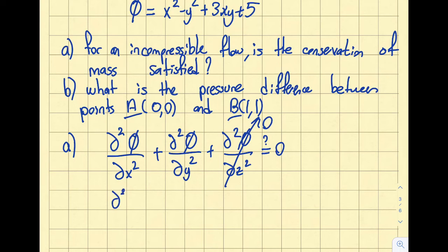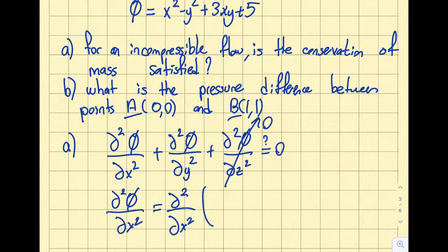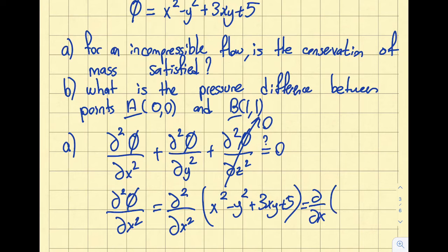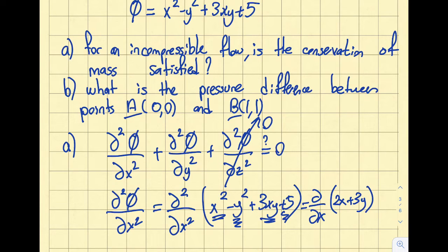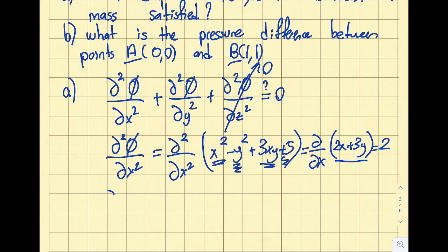Let's evaluate ∂²φ/∂x². That will be the second partial derivative with respect to x of the function φ = x² − y² + 3xy + 5. Taking the first partial: x² becomes 2x, the y² term vanishes, 3xy becomes +3y, and 5 vanishes. Taking the second partial of 2x + 3y with respect to x gives us 2.